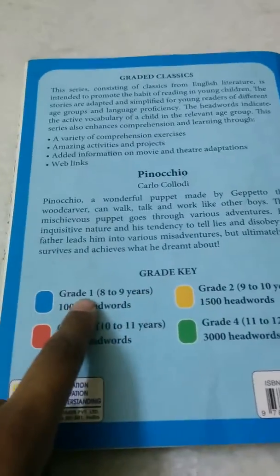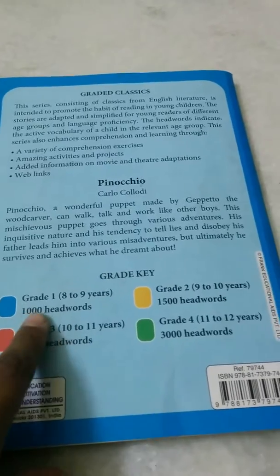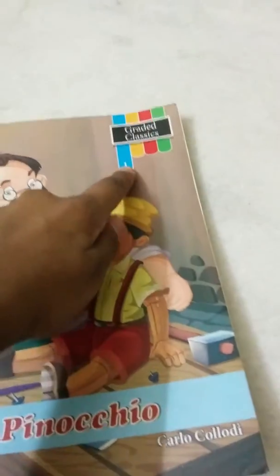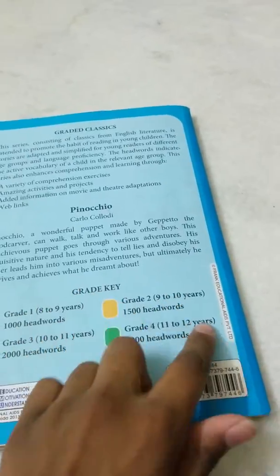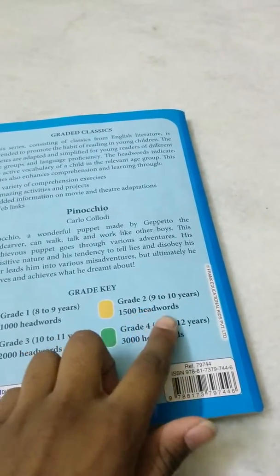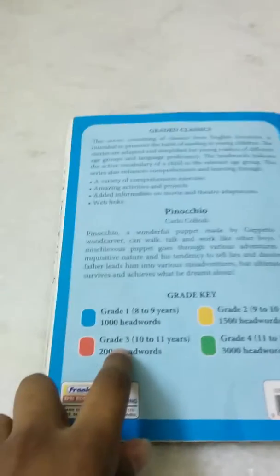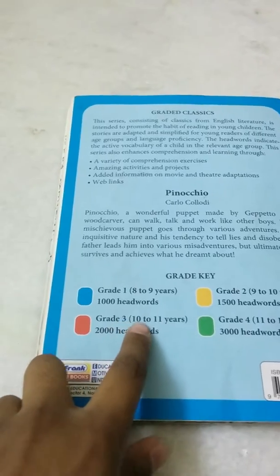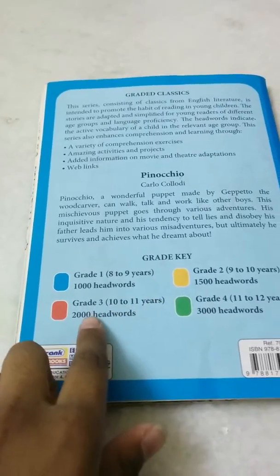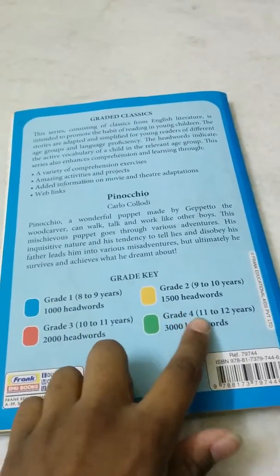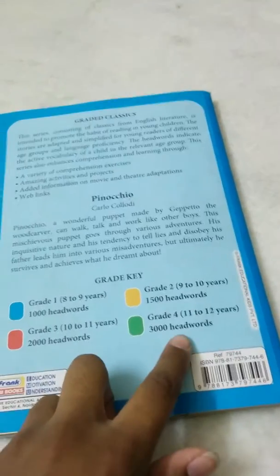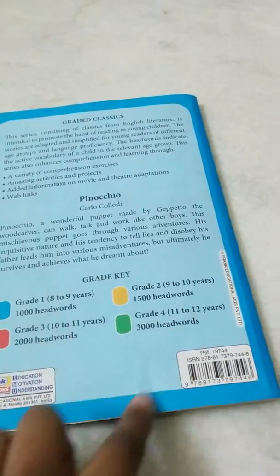And here's the grade key. Grade 1: 8 to 9 years, 1,000 headwords. I think our series is Grade 1, yes it's Grade 1. Grade 2: 9 to 10 years, 1,500 headwords. Grade 3: 10 to 11 years, 2,000 headwords. Grade 4: 11 to 12 years, 3,000 headwords.